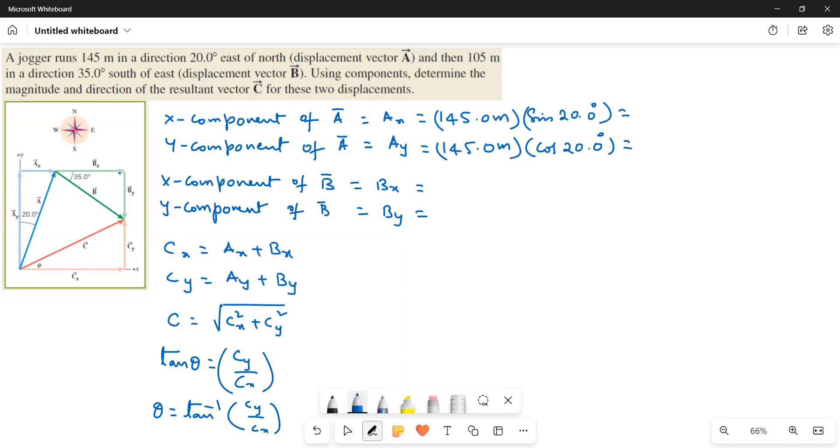For B, this is the 35 degrees, this is the positive direction. Let me write the values like this.